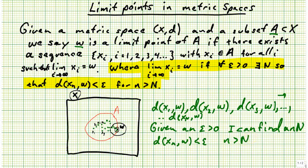If n happened to be, if capital N happened to be a hundred for example, then the distance between x a thousand, x sub a thousand or the thousandth point in the sequence and w would have to be less than epsilon. Okay, so that should get you started on thinking about how this works.